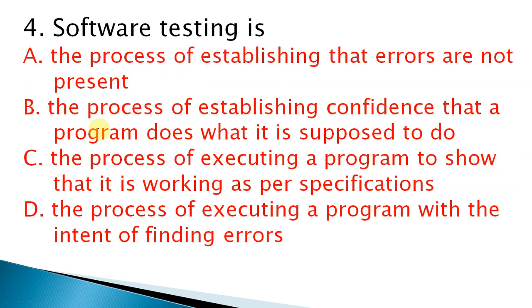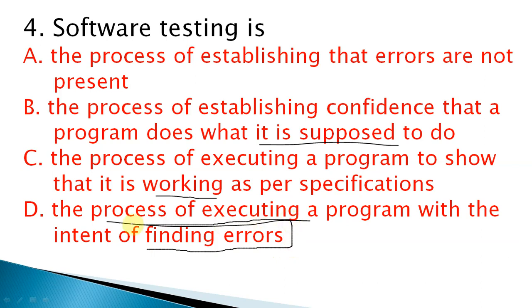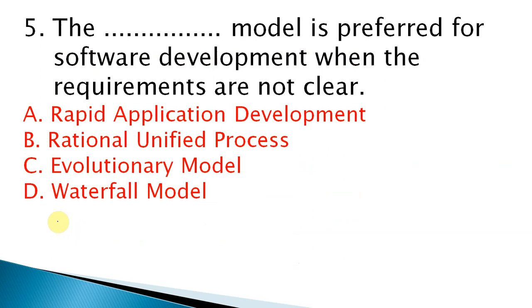Fourth question: software testing is the process of — options include establishing that errors are not present, establishing confidence that a program does what it is supposed to do, executing a program to show it works as per specification, and executing a program with the intent of finding errors. The correct answer is D: executing a program with the intent of finding errors.